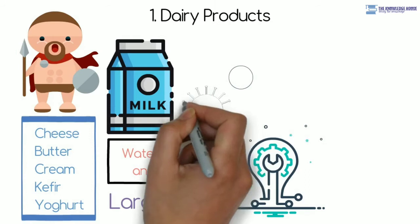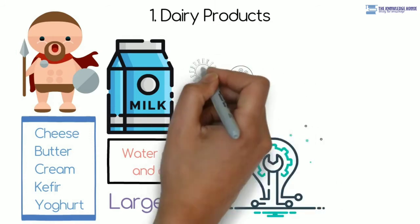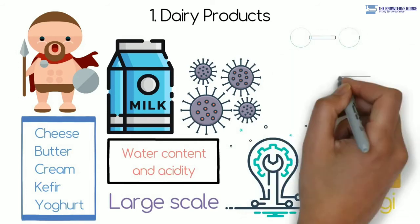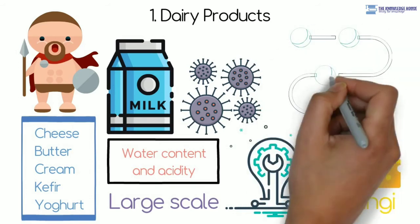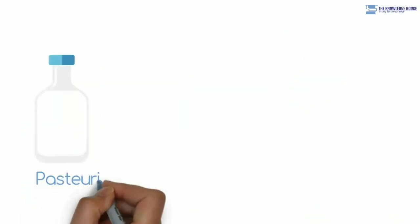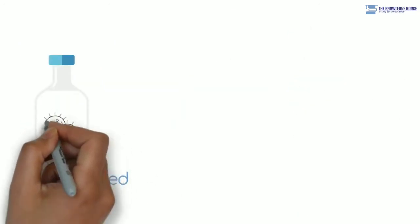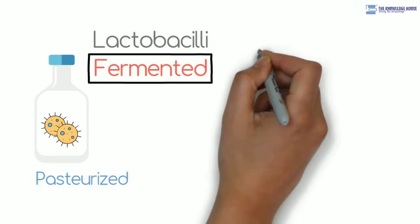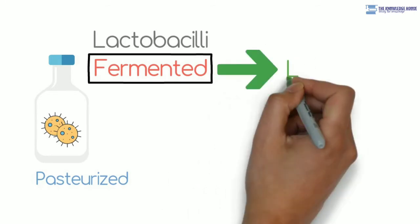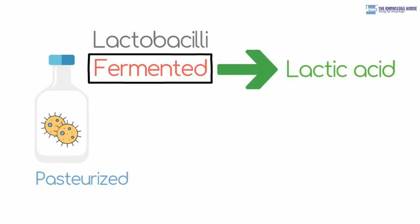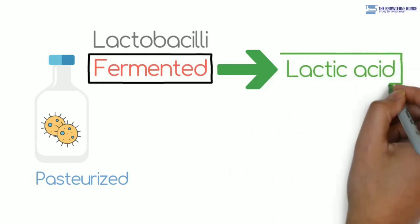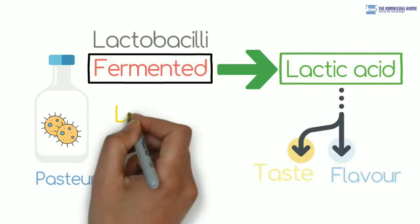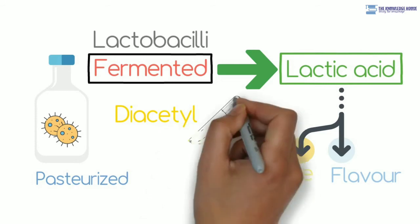For production of most of the milk products, bacteria in milk itself are used. Only cheese is produced with the help of fungi. Basic process for production of yogurt, cheese and cream is the same. Milk is pasteurized at the beginning to destroy unwanted microbes. It is then fermented with the help of lactobacilli. In this process, lactose sugar of the milk is converted into lactic acid and milk proteins are coagulated with the help of lactic acid. Besides, compounds with taste and flavor are also formed.